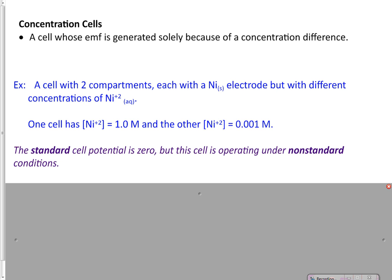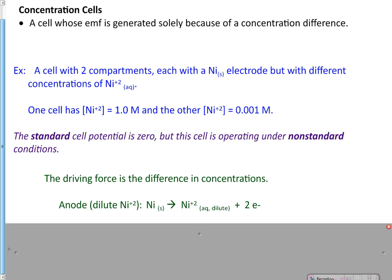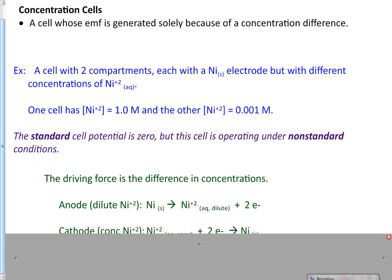So normally we would say the standard cell potential is zero, because if you looked it up at standard conditions, the value you could find for nickel in the appendix E would be the same as this nickel. So when you subtract them, they would get a zero. But because this is operating under non-standard conditions, it can actually have a voltage. So the driving force is because of the difference in concentrations. We know that oxidation is happening where the dilute nickel is. And the cathode is reduction. That is happening where the concentrated nickel is.